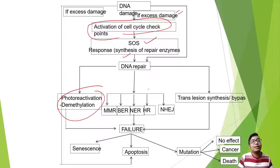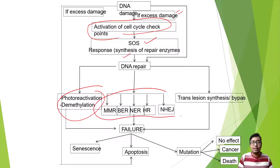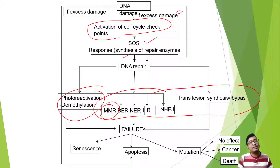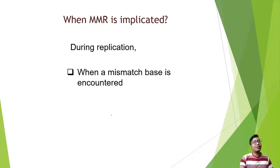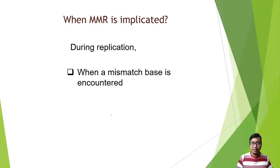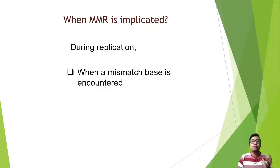Now we will be starting the series of DNA repair proper in eukaryotes, beginning with the first mechanism highlighted in this table, which is mismatch repair. You should know when mismatch repair is implicated. The name 'mismatch' means when there is no match.